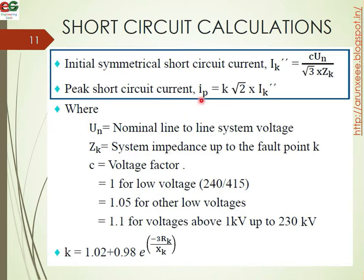The peak short circuit current IP equals K multiplied by root 2 multiplied by IK double dash. Here, UN is the normal line-to-line voltage, ZK is the short circuit impedance, and C is the voltage factor. The voltage factor C is 1.05 for low voltage systems and 1.0 or 1.1 for systems above 1 kV up to 230 kV.